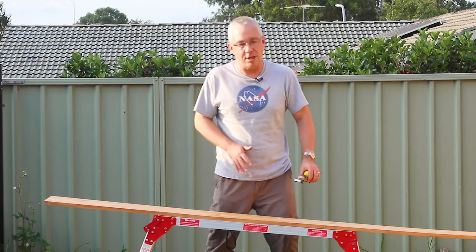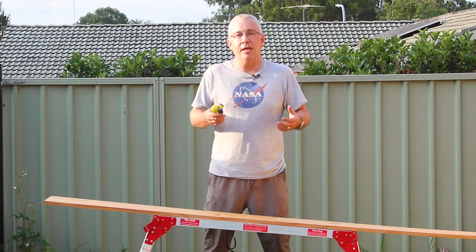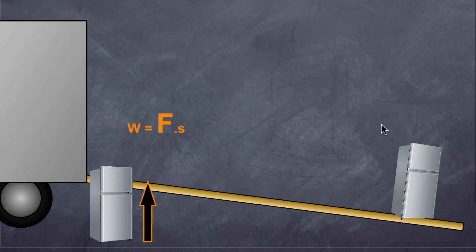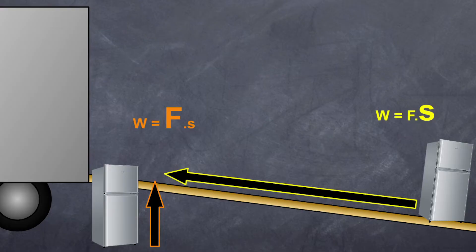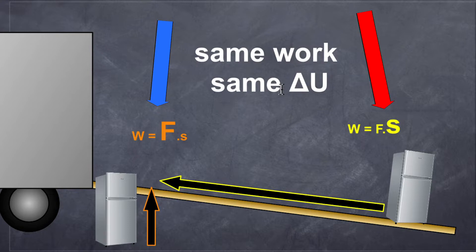The formula is F × s × cos(θ). I give my students this scenario: two removalists both need to lift a fridge onto a one-metre-high truck. One uses a long ramp; the other lifts it straight up. Who does the greatest amount of work? Both have the same change in potential energy, so they do the same amount of work — even though one uses a large force over a short distance and the other a smaller force over a longer distance.